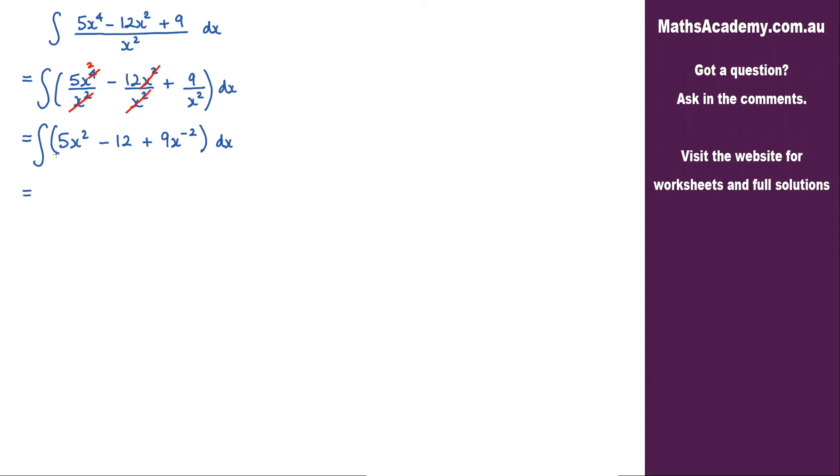Looking at this first term, we would have 5x. We increase the power by 1 and divide by the new power. The 12 will become 12x. And then we've got the 9x. We increase the power by 1, so we get a negative 1, and we divide by the new power, negative 1. And then we just need to add on the constant of integration.